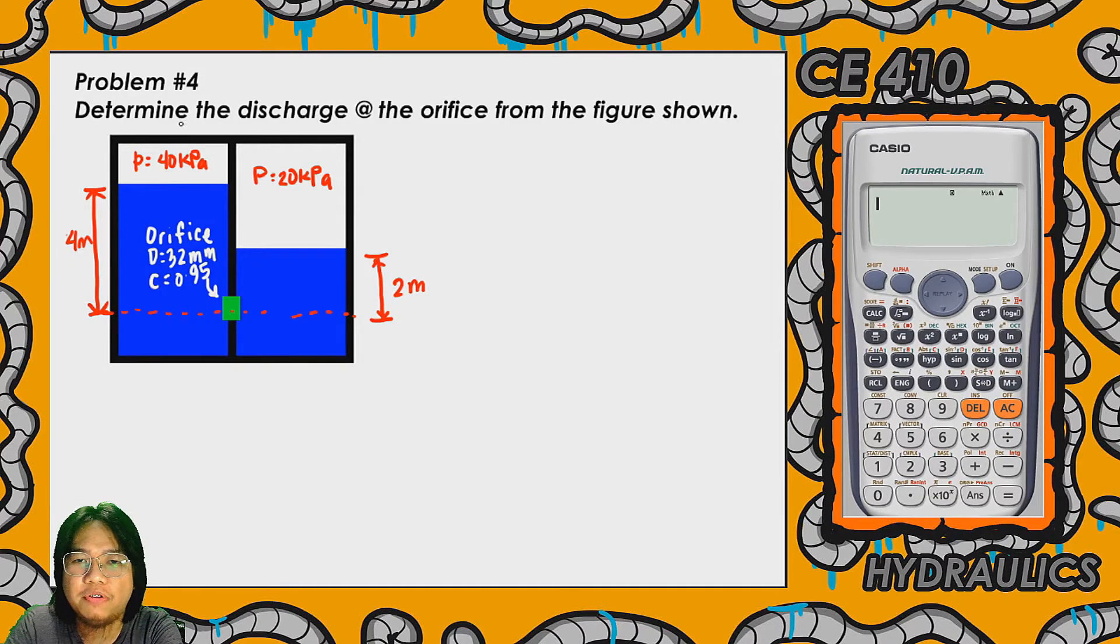So this is the problem - Problem number 4: determine the discharge at the orifice from the figure shown.